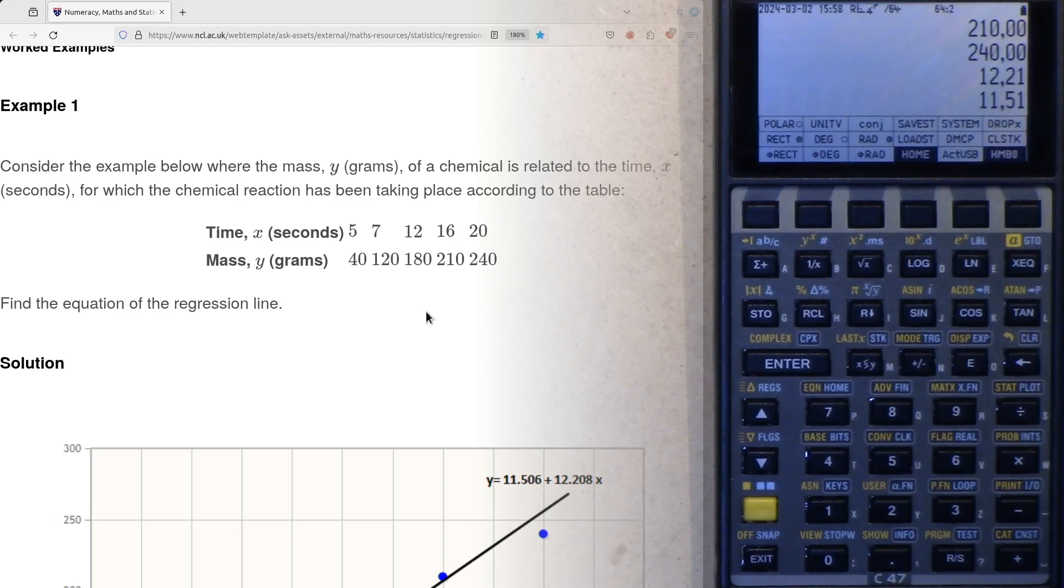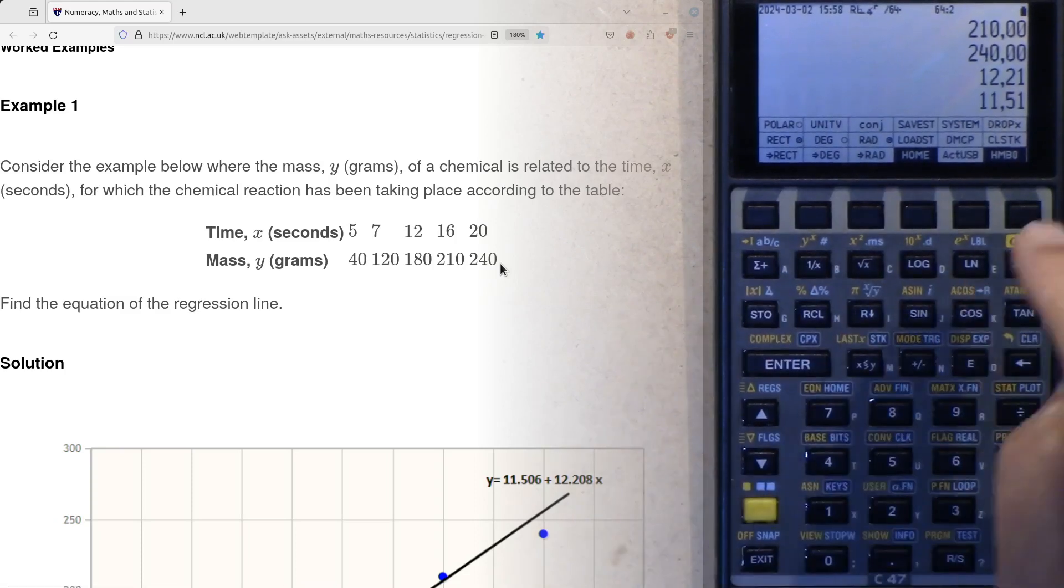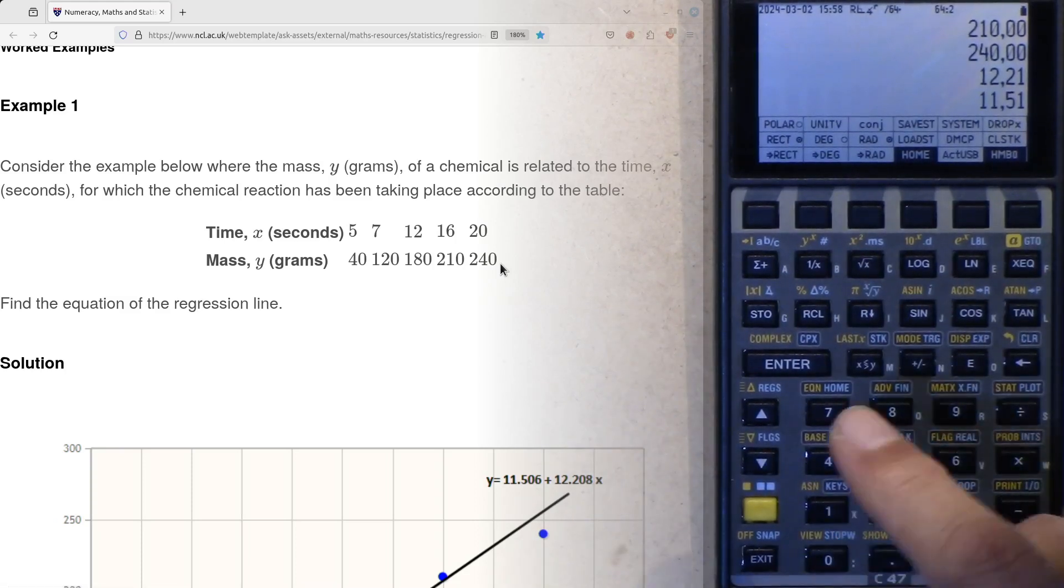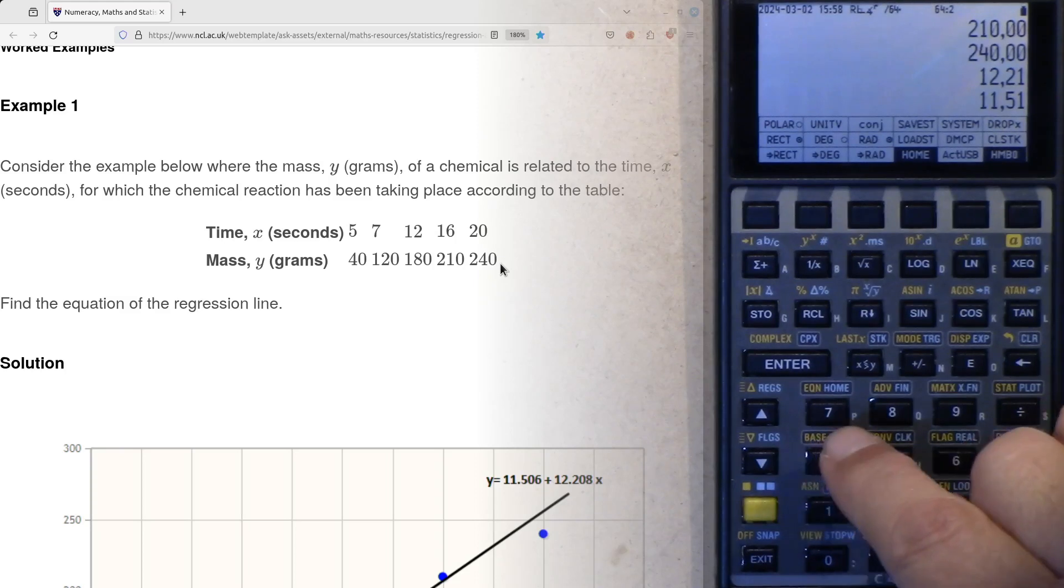Next thing is to enter these data points here. Since we are on an RPN machine, we have to put in Y first. So the lower row here has to be entered first and then the X. So let's get started.